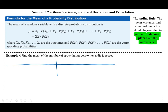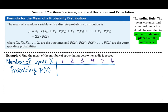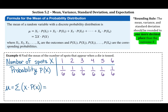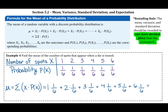The rounding rule: for mean, variance, and standard deviation, round to one more decimal place than your outcome values. Example four: find the mean number of spots when a die is tossed. The values are 1–6, each with probability 1/6. So μ = 1·(1/6) + 2·(1/6) + 3·(1/6) + 4·(1/6) + 5·(1/6) + 6·(1/6) = 21/6 = 3.5.